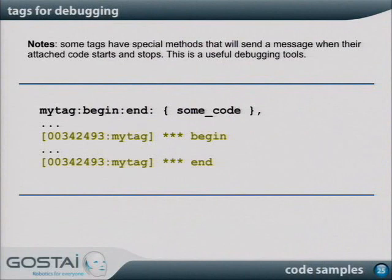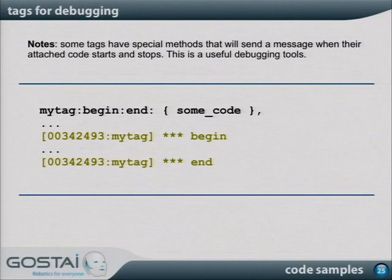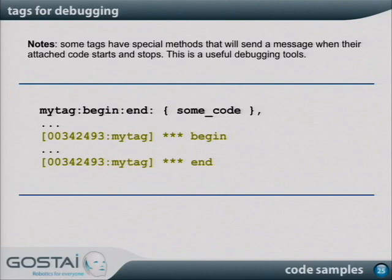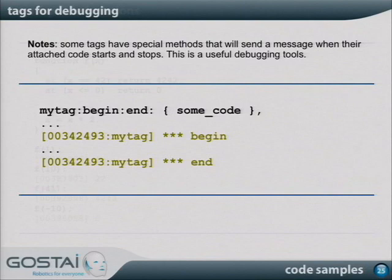Tags can be used as a debugging tool. You can customize tags so they emit a message when the code they're attached to starts and when it stops — that's what begin and end tags do. You get the information that it begins and it ends, which is extremely useful for designing applications that monitor what's happening in the robot and for designing debuggers. It's a simple idea but proven extremely useful.